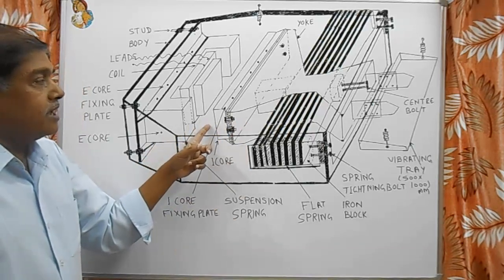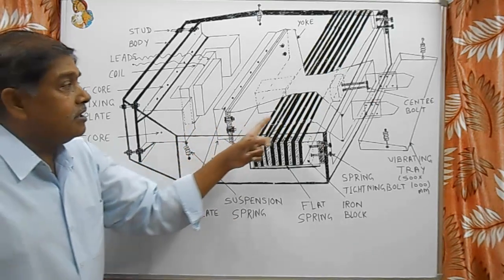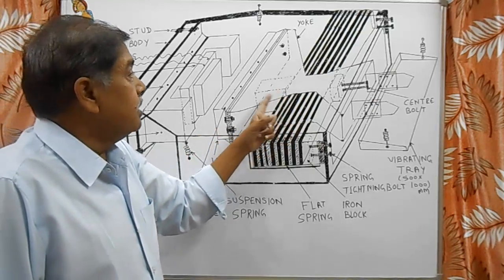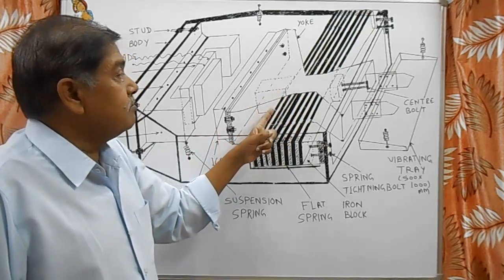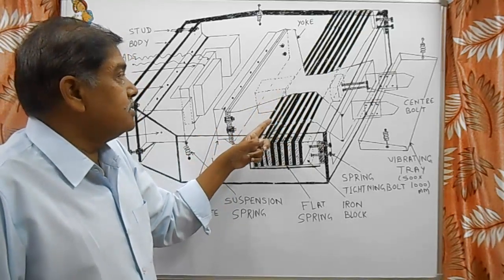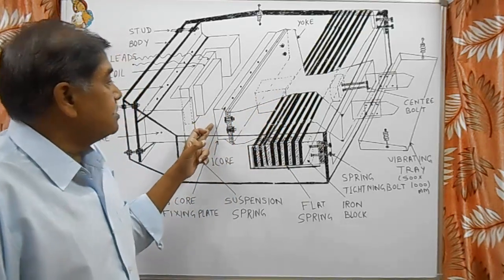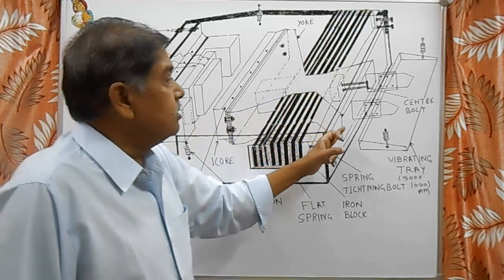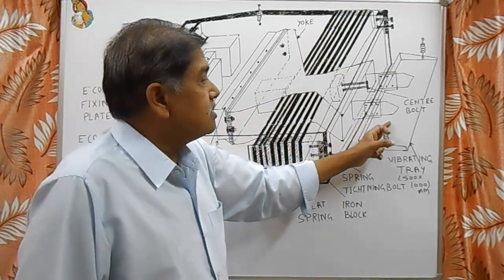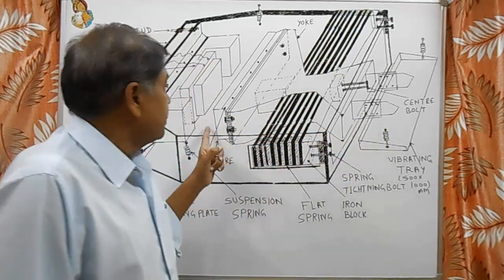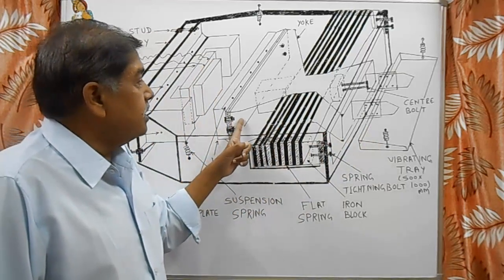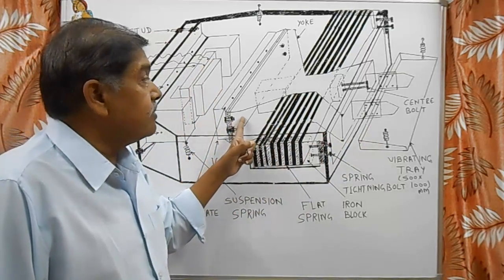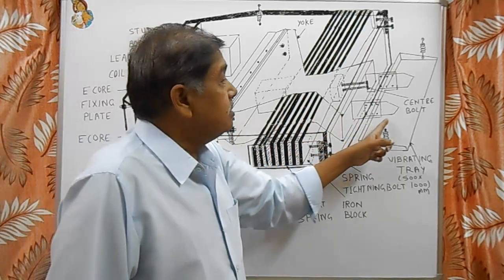This is the spin and this is the mass. The spin-mass vibrating system is here. When this I-core vibrates, it transmits its vibration to the yoke. With the help of the yoke, this tray is connected. When the I-core vibrates, the yoke vibrates, and with the help of this, the tray vibrates.